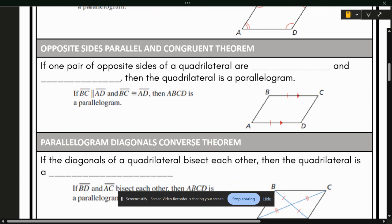Now opposite side parallel and congruent theorems. This is one that's a little bit different from what you've seen, but it uses the same principles. If one pair of opposite sides of a quadrilateral are congruent and parallel, then the quadrilateral is a parallelogram. And it's got to be specifically the same exact sides in order for this to work.